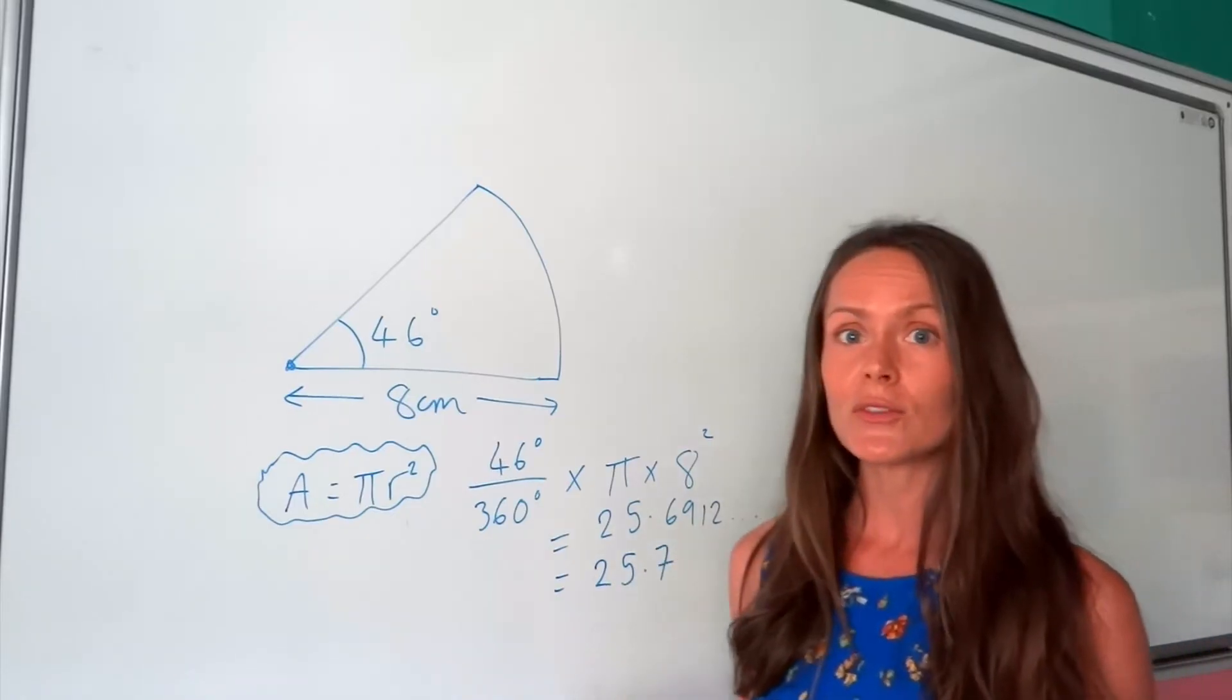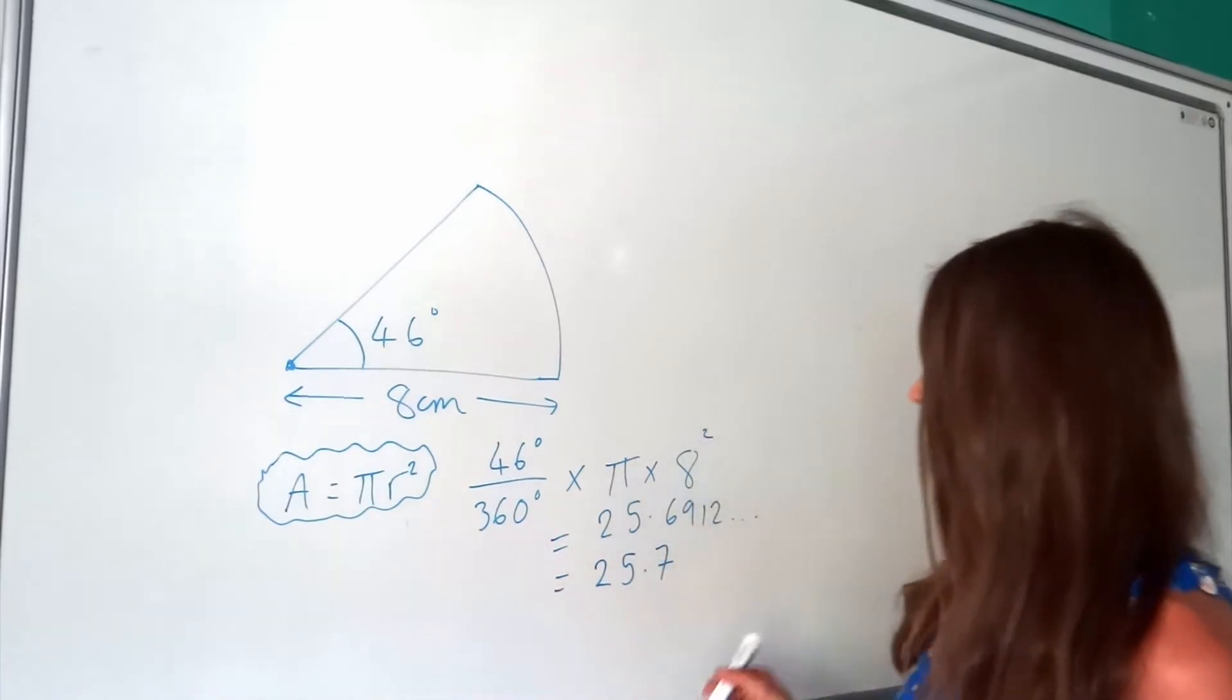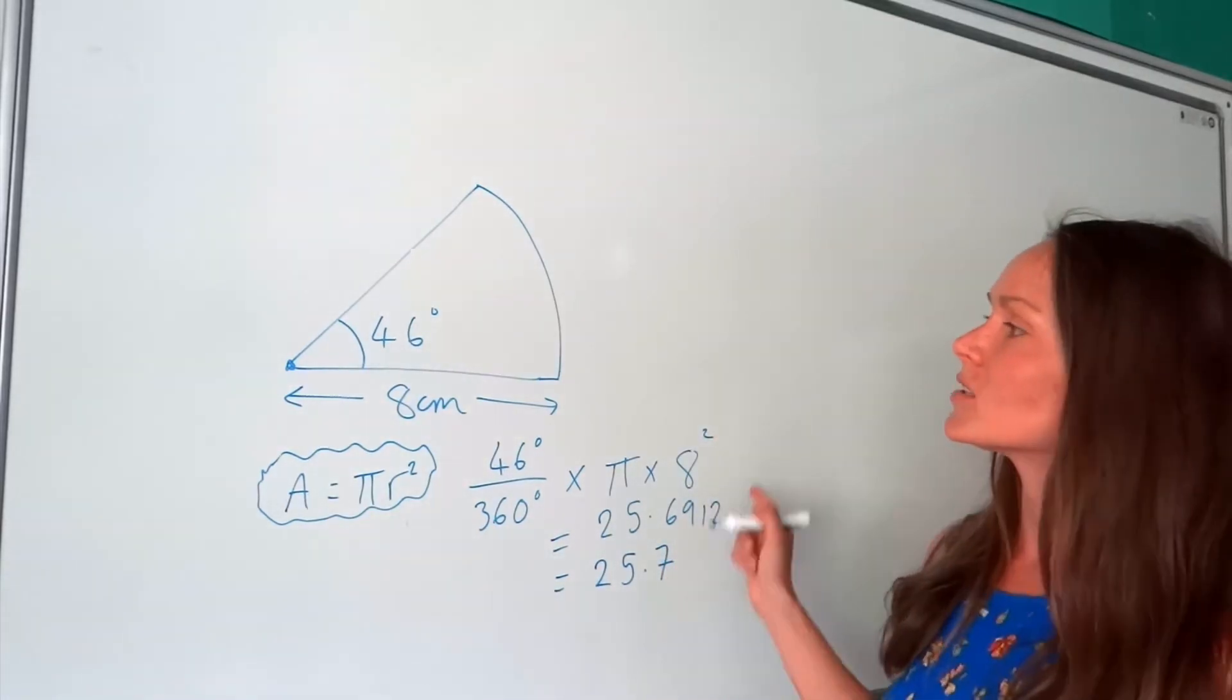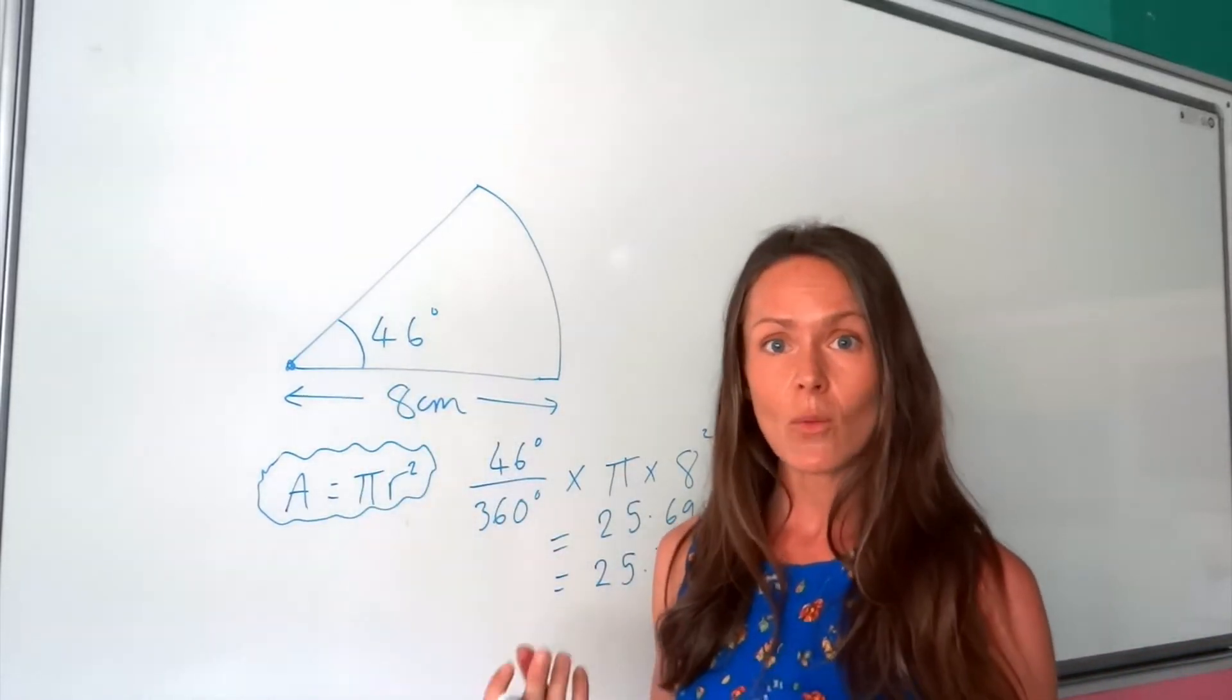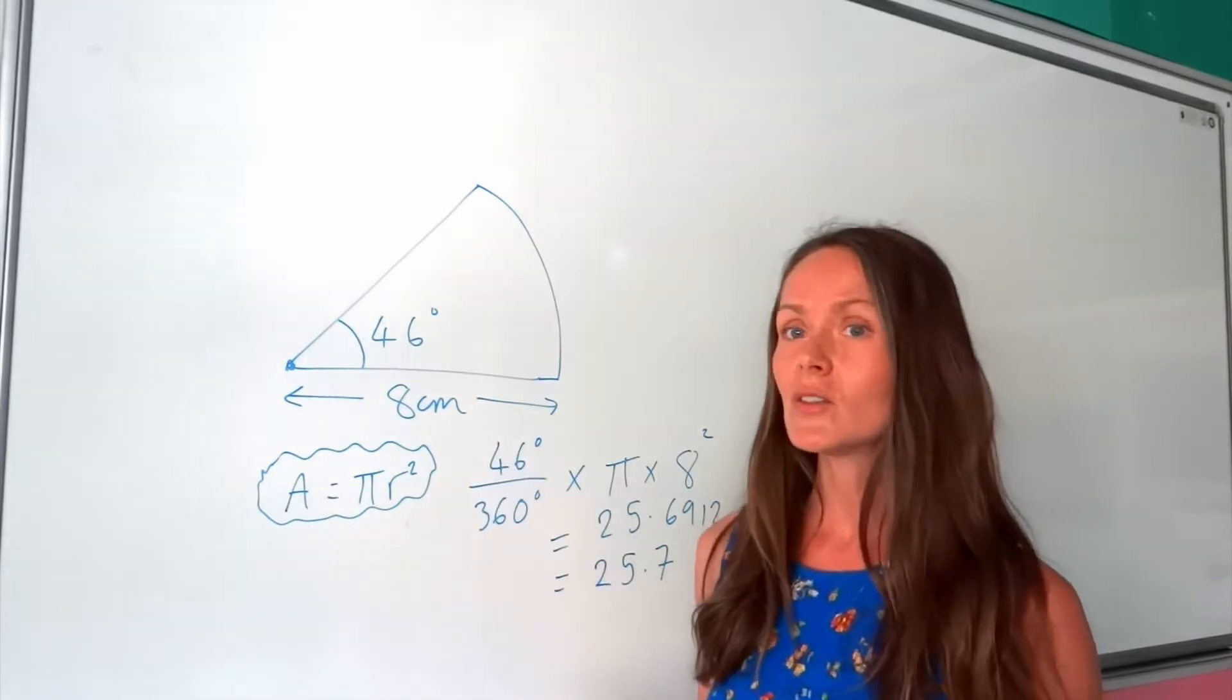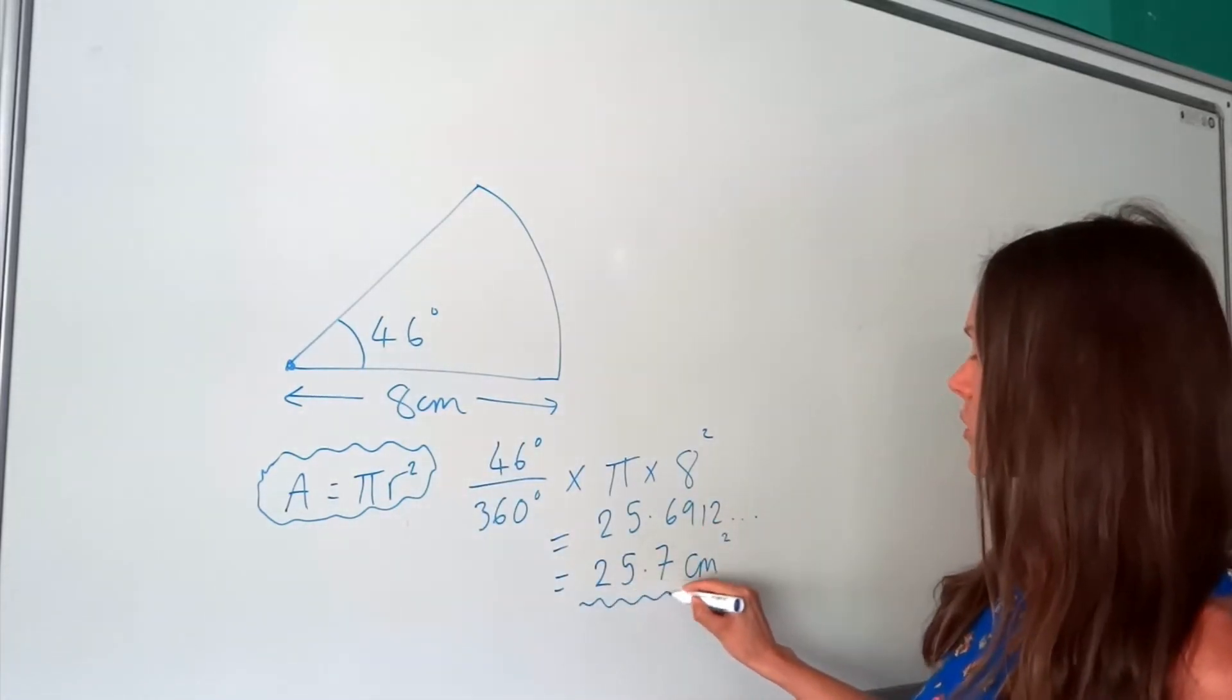If you're not very confident at rounding to 3 significant figures, then check out my other video on rounding. And one last thing with this question: Don't forget the units. Area is always squared. So because the dimensions here were in centimetres, our units at the end are centimetres squared.